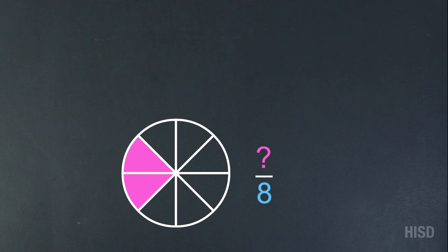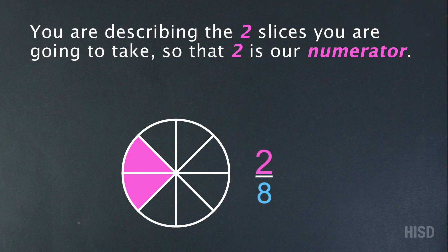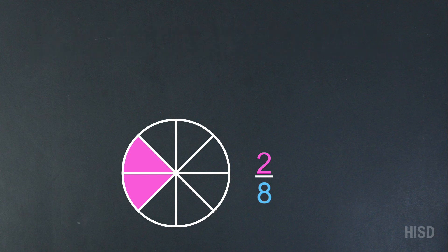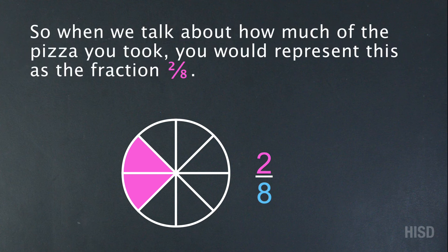You are describing the two slices that you're going to take, so that two is our numerator. When we want to talk about how much of the pizza you took, you would represent this as the fraction two-eighths.